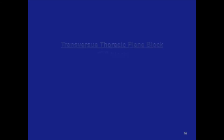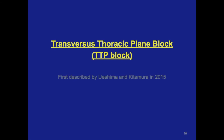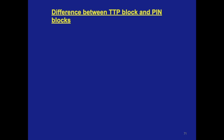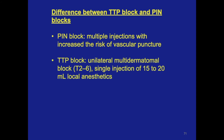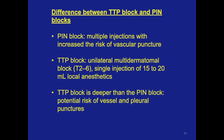The transverse thoracic plane block was first described by Oshima and Kitamura in 2015. How does this new regional block clinically differ from the PIN blocks? Both types of blocks carry risks of vascular rupture. A PIN block needs multiple injections, while the TTP block only needs one single injection of 15 to 20 ml of local anesthetic to block T2 to T6 dermatomes. However, the TTP block is performed deeper than the PIN block and carries the additional risk of pleural puncture.